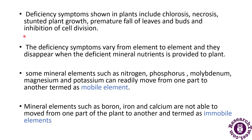Deficiency symptoms shown in plants include chlorosis, necrosis, stunted plant growth, premature fall of leaves and buds, and inhibition of cell division. Deficiency symptoms vary from element to element and disappear when the deficient mineral nutrient is provided. Some mineral elements such as nitrogen, phosphorus, molybdenum, magnesium, and potassium are mobile elements — they can readily move from one part of the plant to another. Immobile elements cannot move from one part to another.